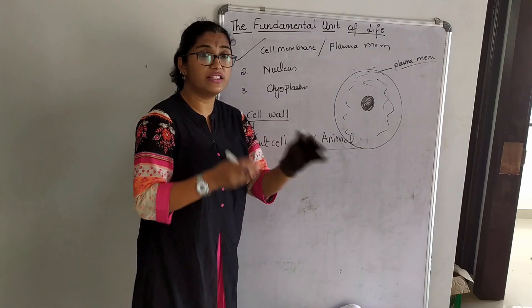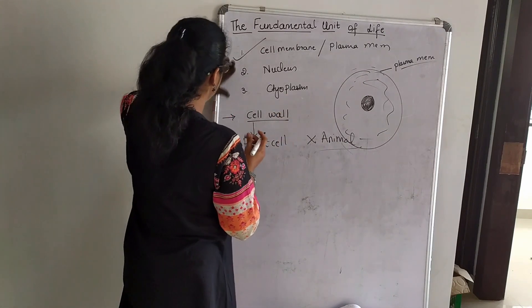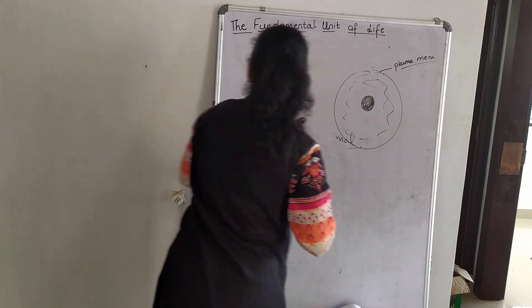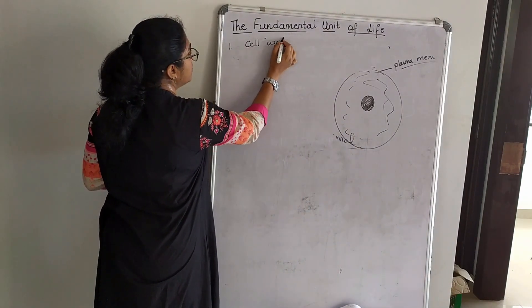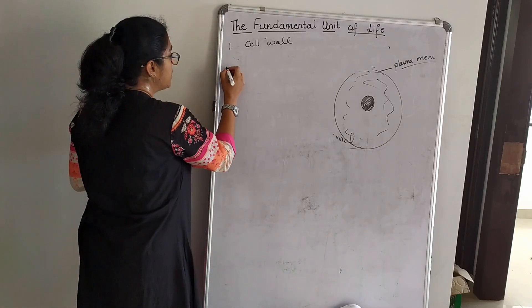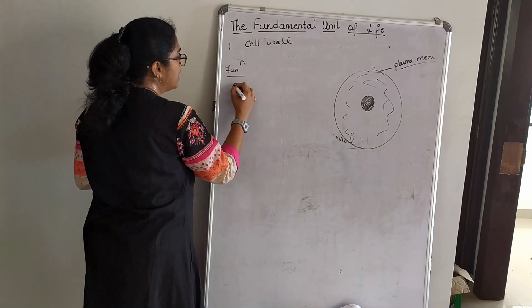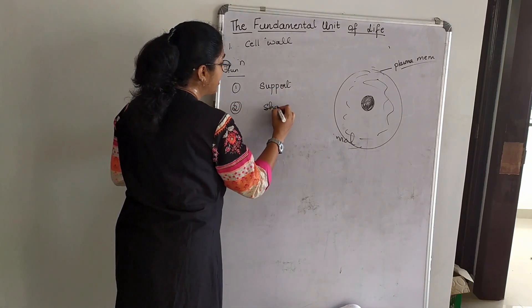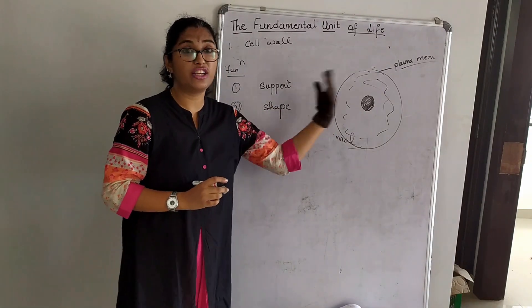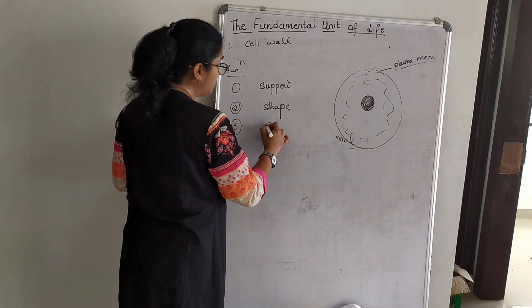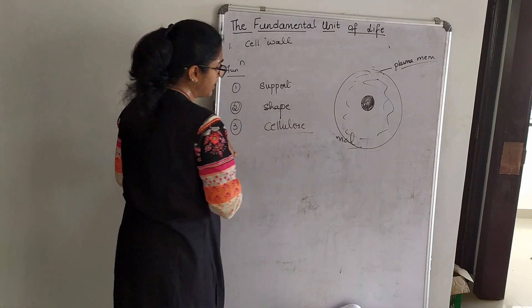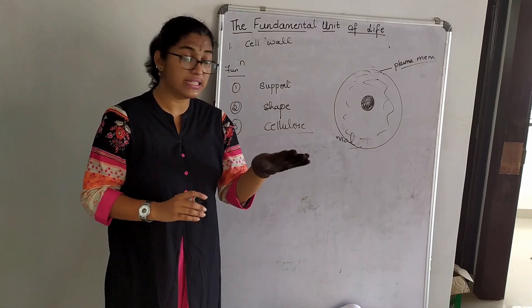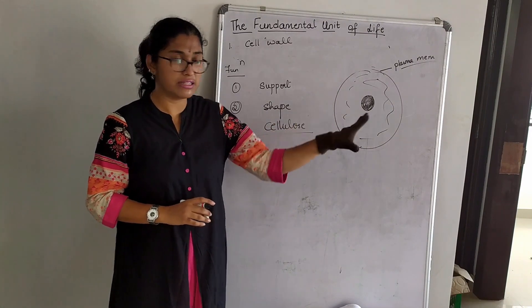The functions of the cell wall are: first, it gives rigid support to the cell; second, it gives a definite shape to the cell; third, it is made up of cellulose. An important question: where do we find the cell wall and what is it made of? We find cell wall in plant cells and it is made up of cellulose.